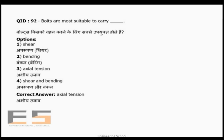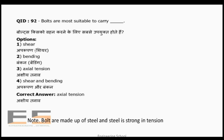Question 92: Bolts are most suitable for taking actual tension because bolts are made of steel, and steel is stronger in tension compared to shear and bending.